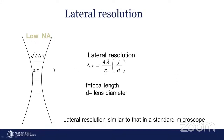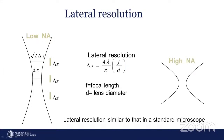The lateral resolution is defined by delta x — the focused spot size at the sample. It is a function of the focal length of the lens and the diameter of the beam, and also depends on the numerical aperture of the lens. A high numerical aperture objective gives higher lateral resolution, while a low numerical aperture gives lower lateral resolution.